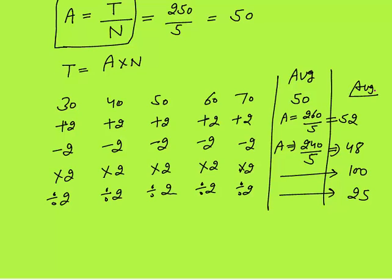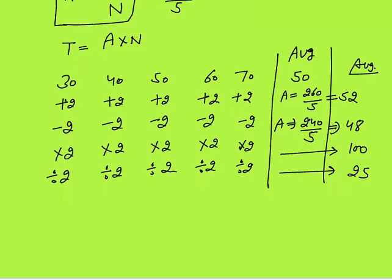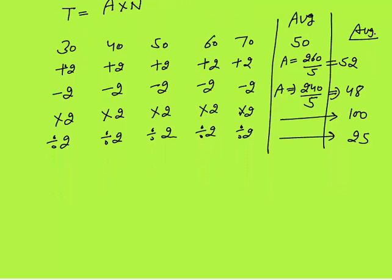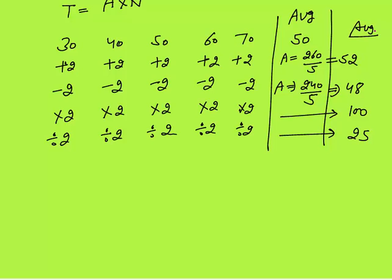This is a very simple concept: whatever you change in each observation, the average will change accordingly. If you add the same constant to each observation, average will increase by the same constant. This is especially useful in age-based questions.